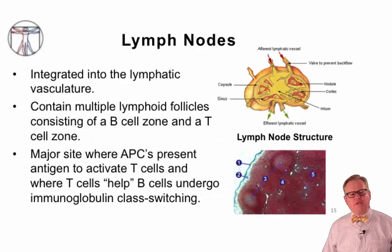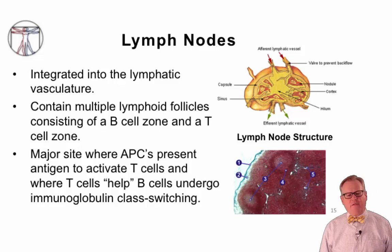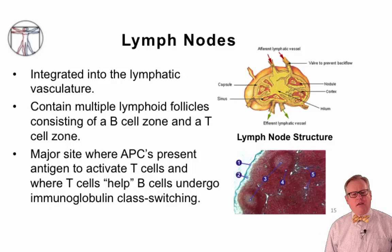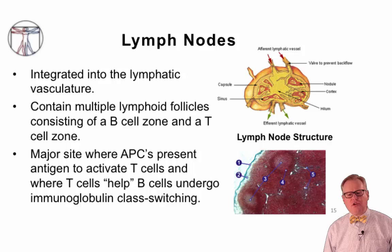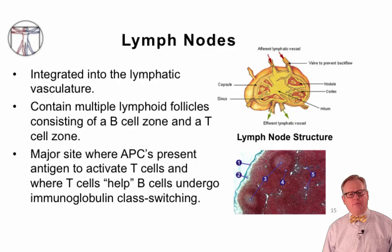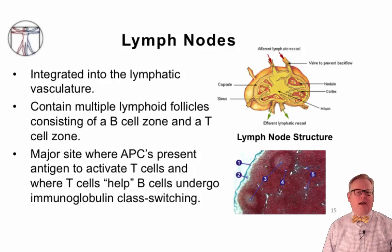In route, the lymph filters through the lymph nodes, which have a very specific architecture that allows the lymph to enter and circulate through and around the lymphocytes present in the lymph node. The lymphocytes are aggregated together in lymphoid follicles that have a B cell zone and a T cell zone. These lymphoid follicles are the sites at which B and T cells interact, where T cells help B cells to undergo immunoglobulin class switching and to develop adaptive immune responses.